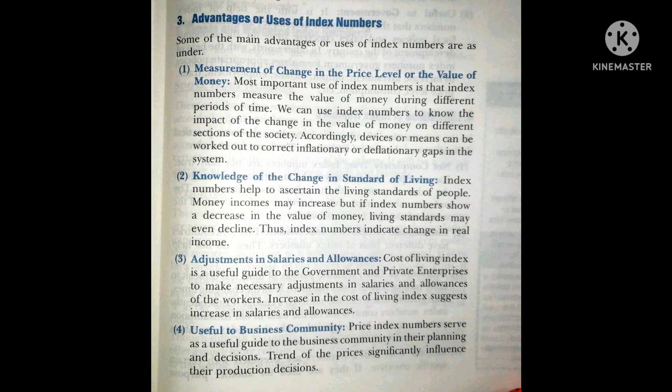With the help of index numbers we can measure the value of money in different periods of time and see its impact on lower-class society. Index numbers show how rising inflation — mehengai — affects different sections of society, and accordingly different devices or means can be worked out to correct inflationary or deflationary gaps in the system.